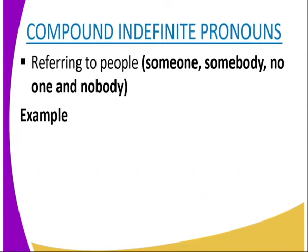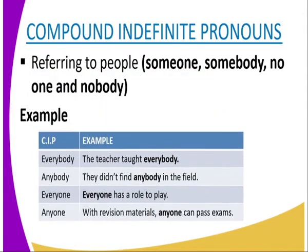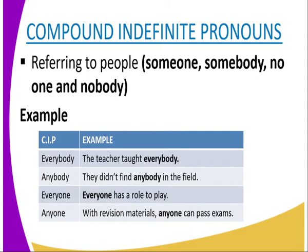Compound indefinite pronouns that refer to people include words such as someone, somebody, and nobody. For example: 'The teacher taught everybody.' Another example using 'anybody': 'They didn't find anybody in the field.' You can also use 'everyone': 'Everyone has a role to play.'